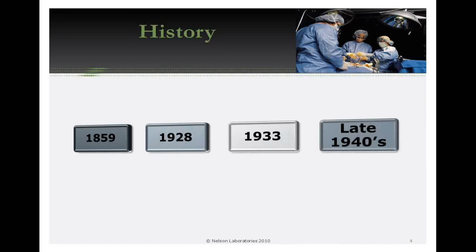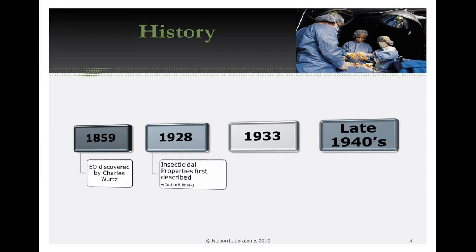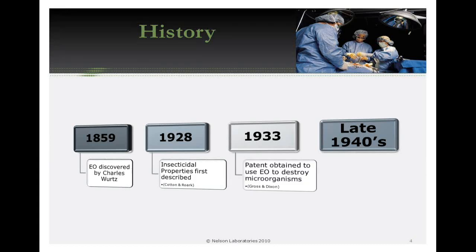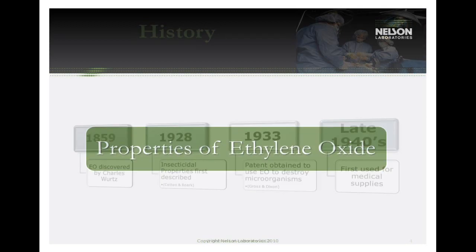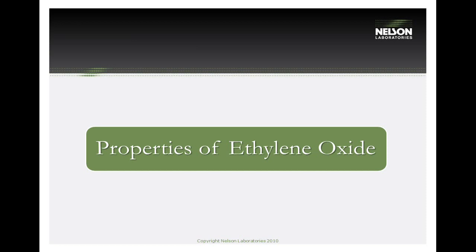Ethylene oxide has a long history. It was first discovered in 1859 by chemist Charles Wurtz, but it wasn't until 1928 that it was shown to have insecticidal properties. In 1933, the first patent was issued for using ethylene oxide to destroy microorganisms, and in the late 1940s it was first used for medical supplies and instruments. Its long history translates to strong regulatory acceptance, making it one of the most studied chemicals available.